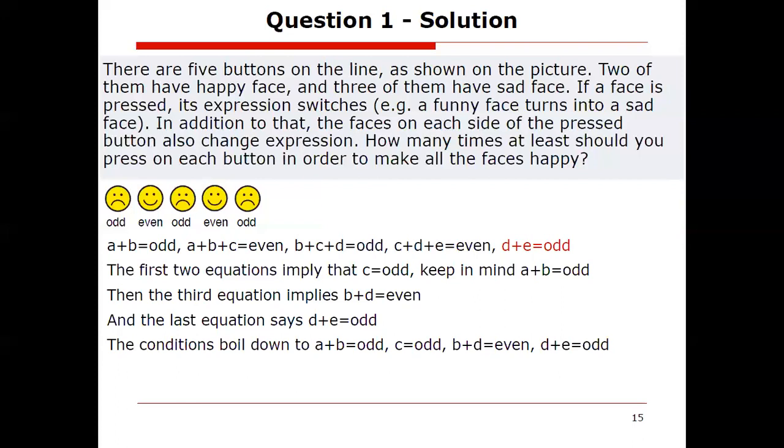We have these interesting conditions now. A plus B must be odd, C must be odd, B plus D must be even, and D plus E must be odd. How can we narrow things down further? Recall that the question that we need to answer is how many times in the least should you press on each button in order to make all the faces happy? We want an at least there. So we need to find values A, B, C, D, and E that satisfy these parity conditions, whether something is odd or even, those are called parity conditions, but also they are as small as possible. One way to encode that would be to say that their sum A plus B plus C plus D plus E must be as small as possible.